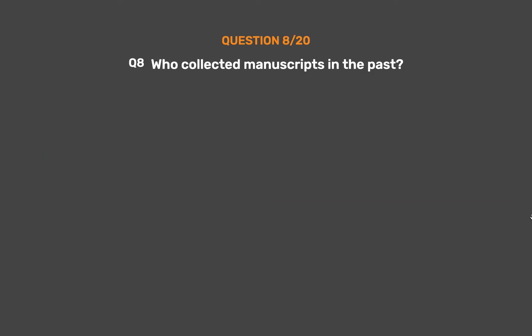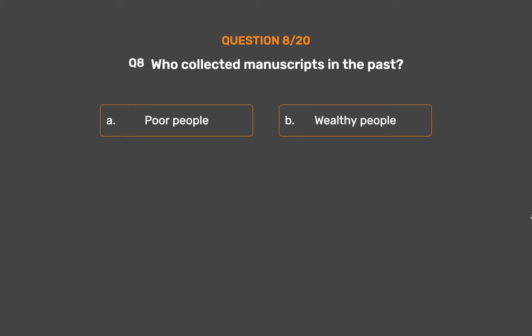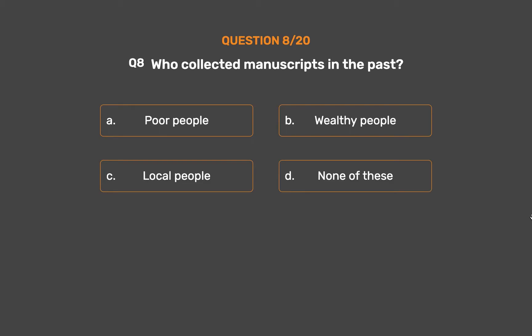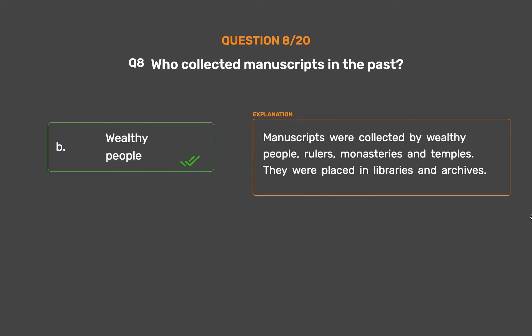Question 8: Who collected manuscripts in the past? Option A: Poor people. Option B: Wealthy people. Option C: Local people. Option D: None of these. The correct answer is Option B: Wealthy people. Manuscripts were collected by wealthy people, rulers, monasteries and temples, and were placed in libraries and archives.